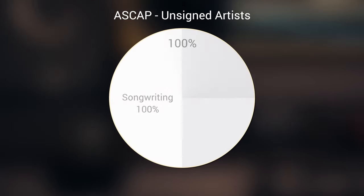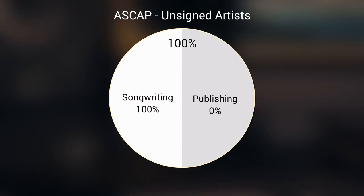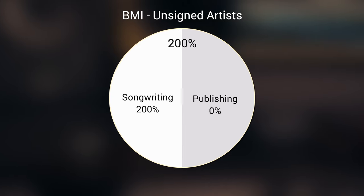For example, if you are a self-published artist — a singer-songwriter with no publishing deal — you don't give DistroKid or CD Baby your publishing because they're just a distributor. On ASCAP, you put 100% into the songwriting portion and 0% into publishing. On BMI, as a self-published independent artist with no signed deals, you give 200% to yourself in the songwriting category and 0% in publishing. Giving yourself everything on ASCAP is 100%; on BMI it's 200%.